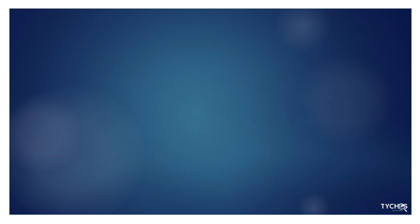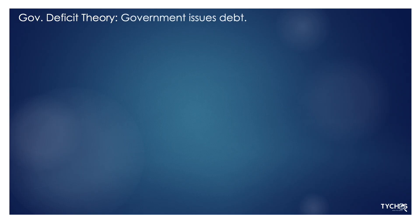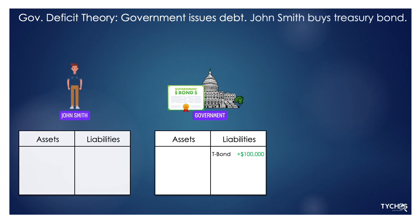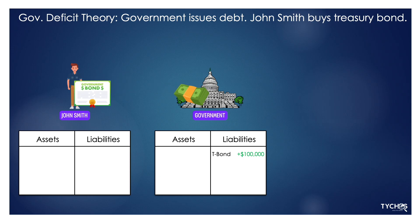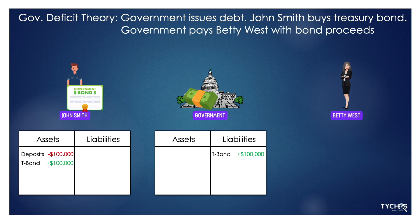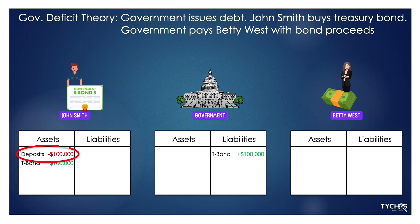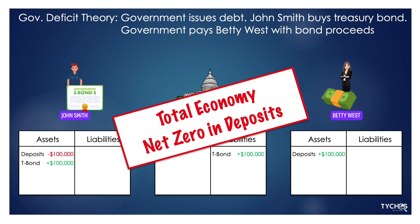Some say that when the government deficit spends — spends more than it takes in — that creates money. But when the government issues debt, which it always does in an amount exactly equal to the deficit, deposits actually go down. When John Smith pays $100,000 to buy a treasury bond, his deposits go down. Yet the government spends that money right away — say, by paying Betty West for consulting services. So John Smith's deposits go down, but Betty West's go up by that exact amount. The money supply stays exactly the same.